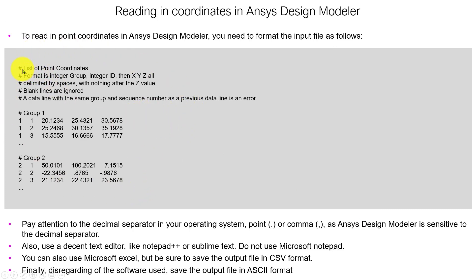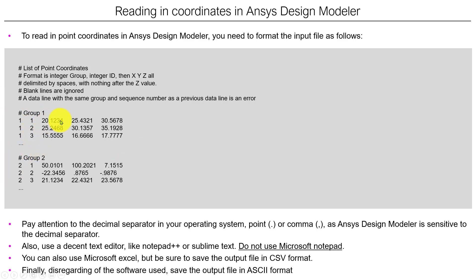When you have the hashtag, pound, or numeral sign, these are comments. Then you give your coordinates like this. The first column represents the group, the second one will be the iterator — coordinate 1, 2, 3, 4 and so on. Then you have the coordinates: X, Y, and Z.